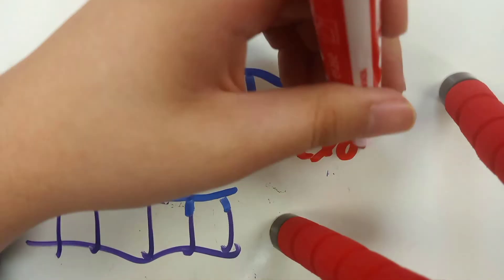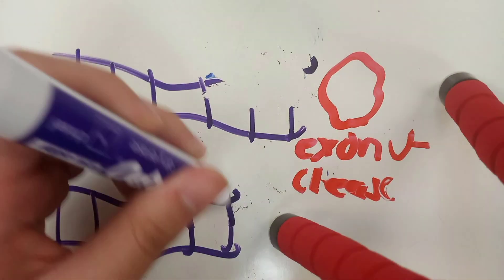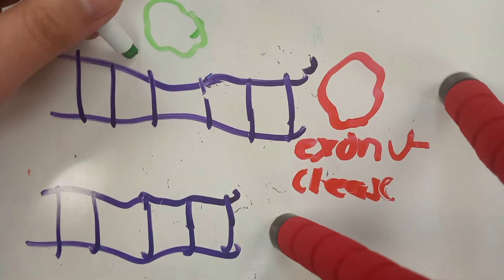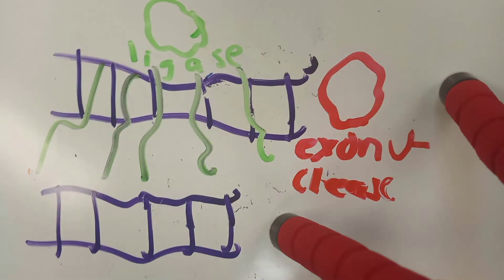Once both strands are complete, an enzyme called exonuclease removes the RNA and the DNA polymerase fills it with the actual DNA. Lastly, an enzyme called DNA ligase seals the fragments and forms a double strand.